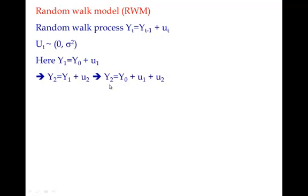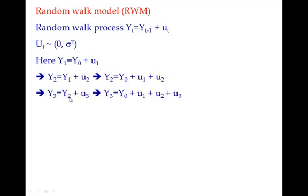In this way, y2 has two error terms plus y0 (the starting value). y3 = y2 + u3, and substituting y2 gives y3 = y0 + u1 + u2 + u3 — three error terms. So in a nutshell, yt will have t error terms.